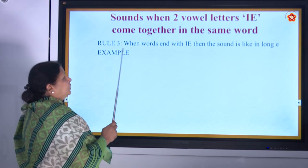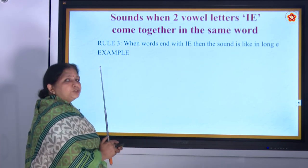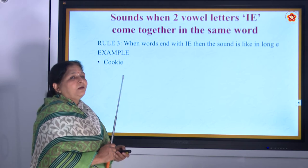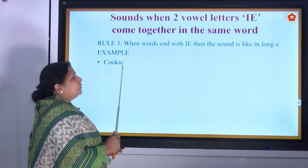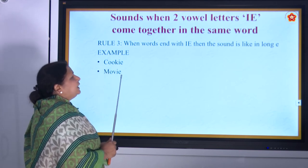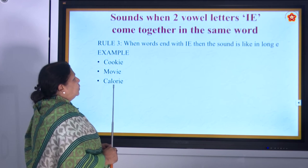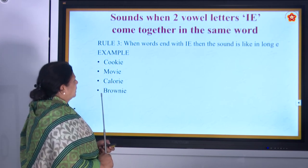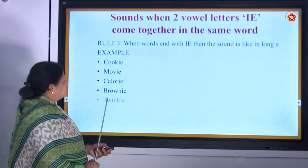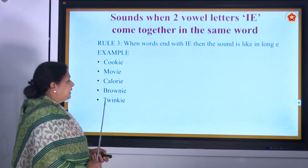The third rule: when words end with I E, then the sound is like long E. Example: cookie — C O O K I E, movie — M O V I E, calorie — C A L O R I E, brownie — B R O W N I E, Twinkie — T W I N K I E. Words ending in I E give the long E sound.